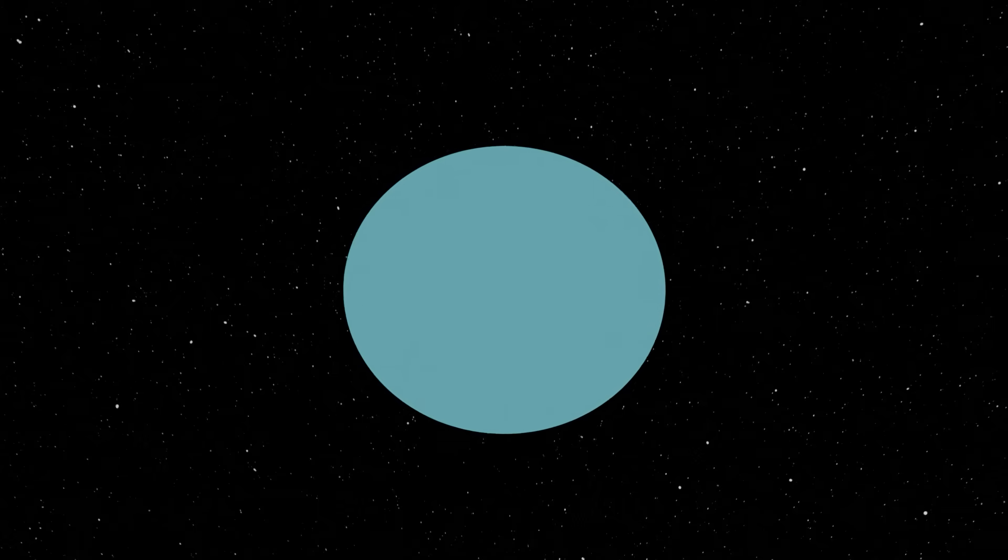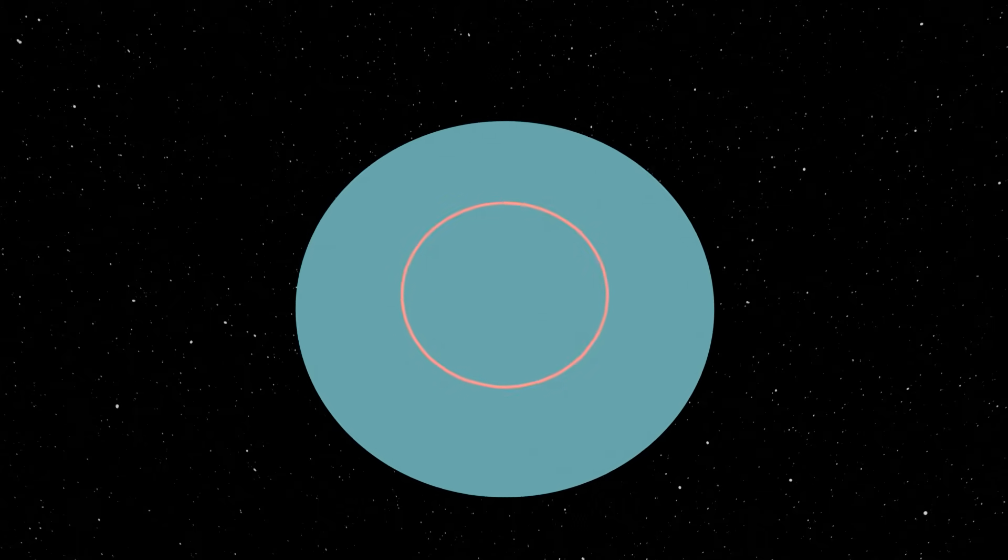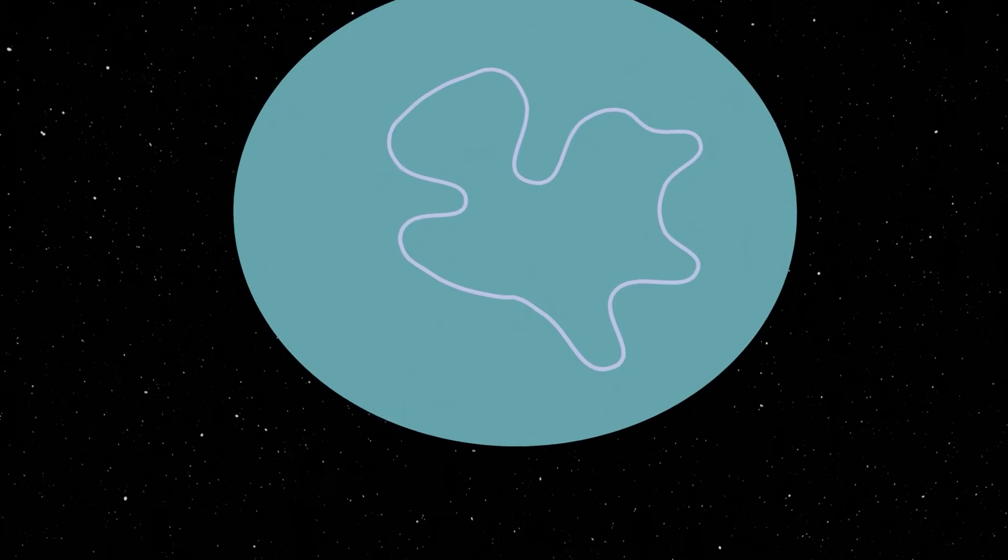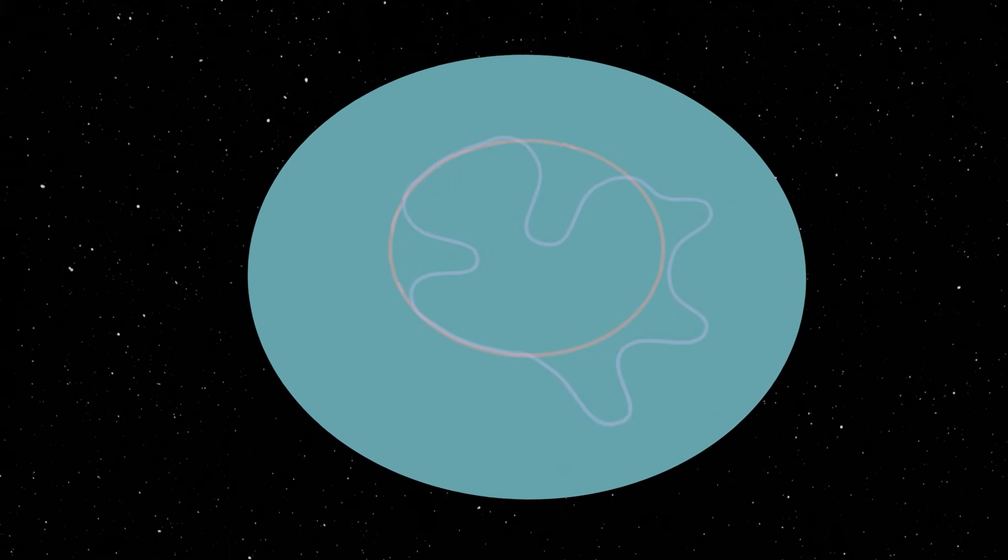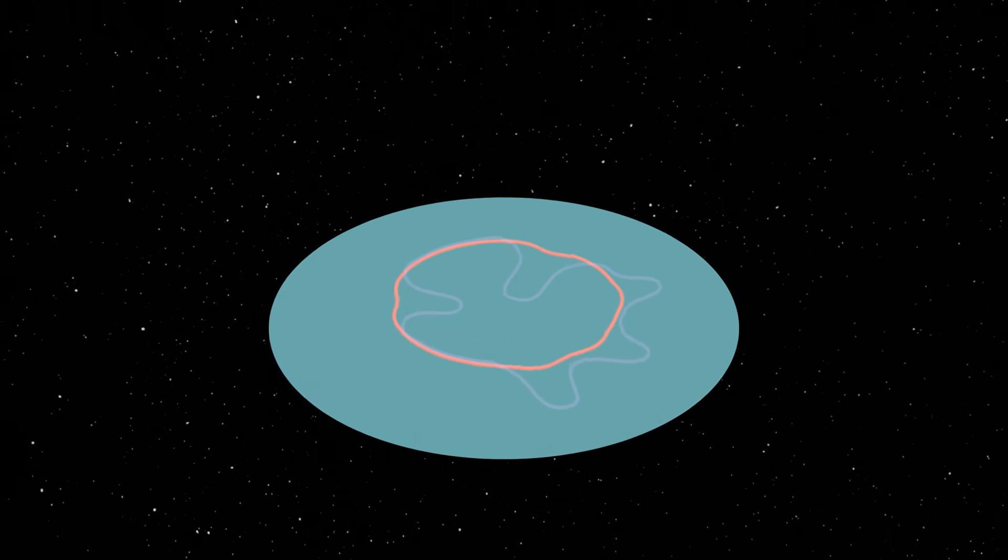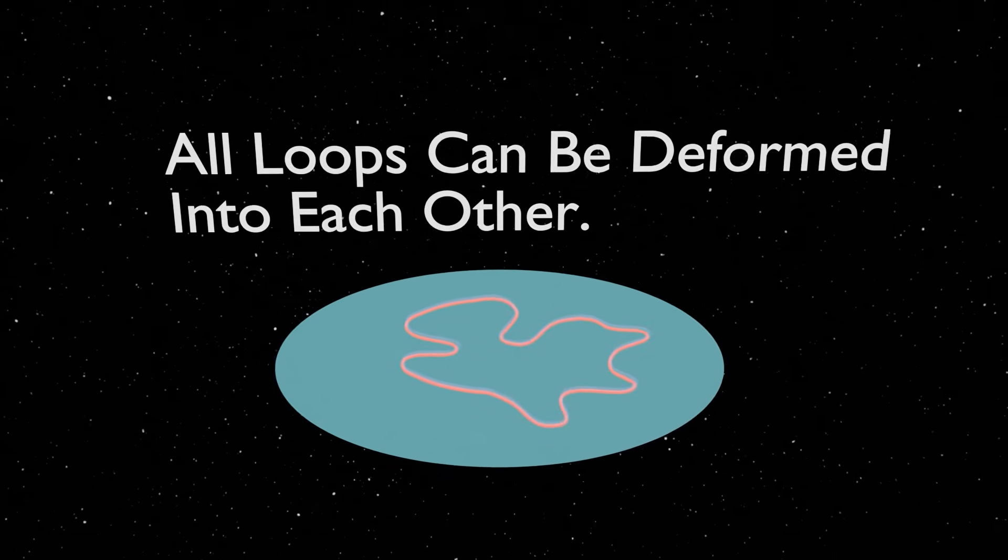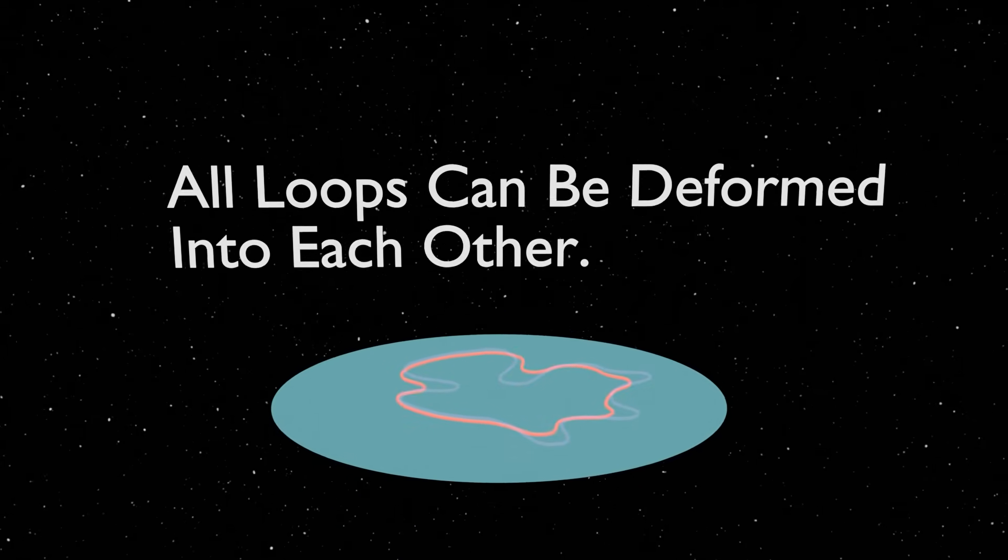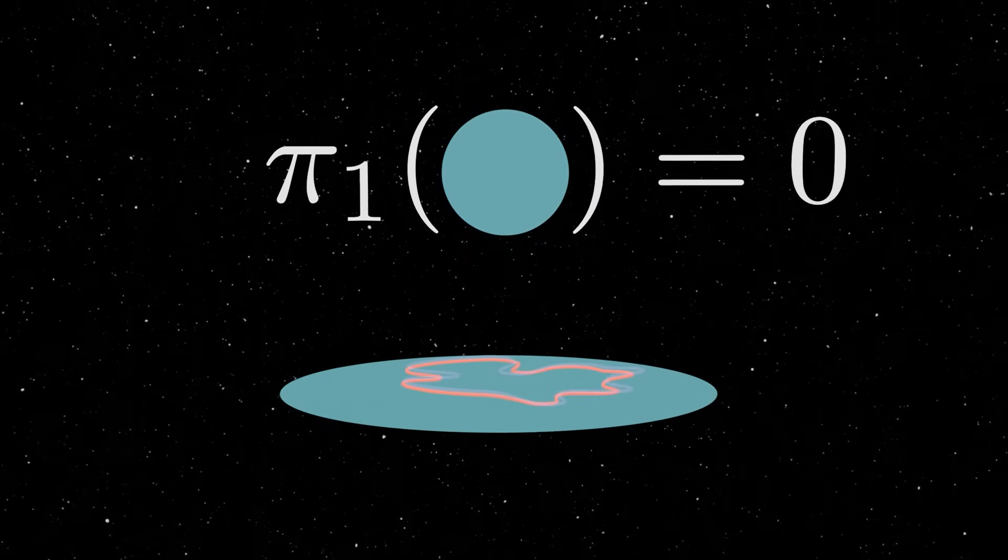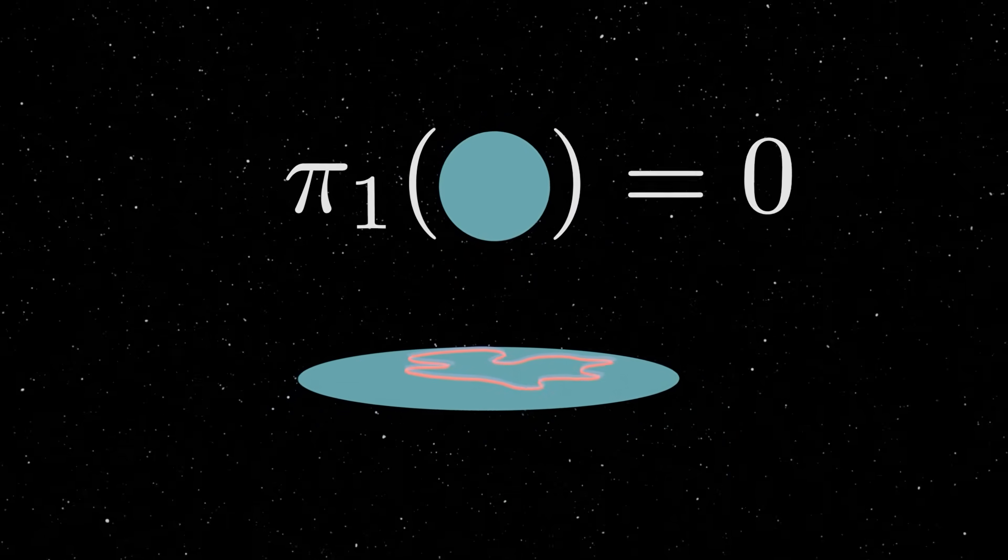For example, if you look at the field circle, every loop on the field circle can be deformed into any other loop continuously. Because of this fact, we can think of the loops on the field circle as carrying no algebraic structure. So in this case, we write that the fundamental group of the field circle, which we denote with this pi 1 symbol, is 0.